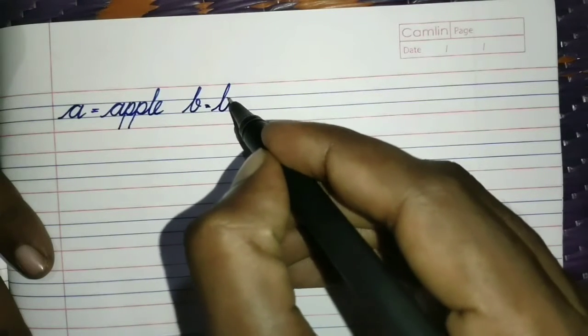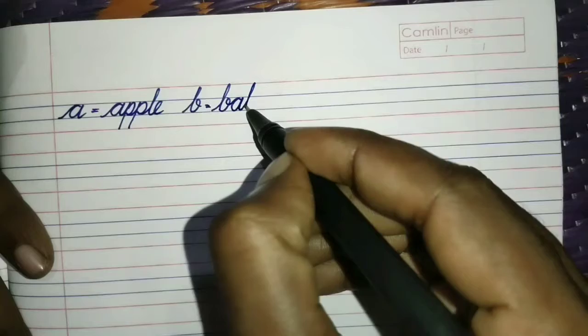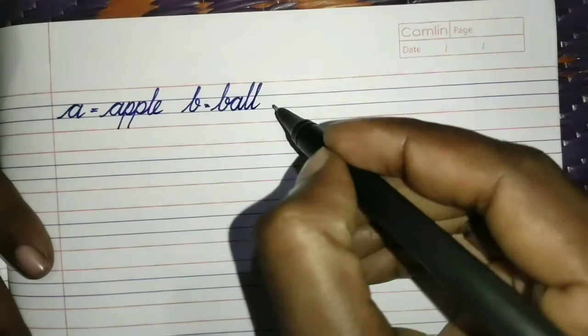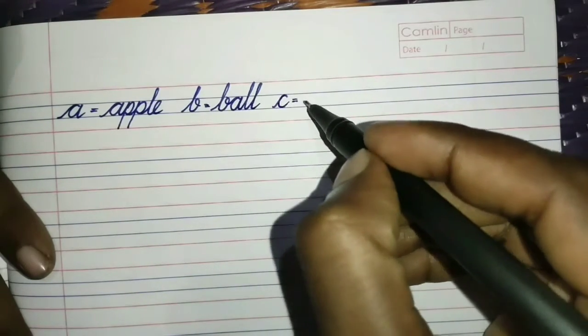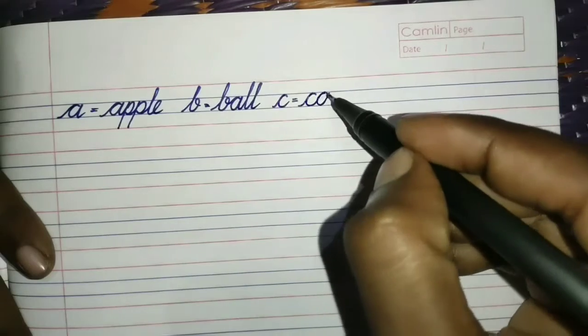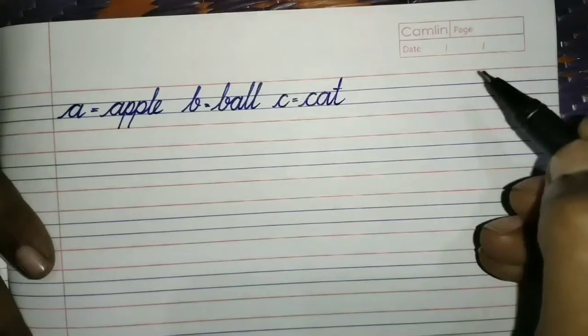A for Apple. A, P, P, L, E. Apple. B for Ball. B, A, L, L. Ball. C for Cat. C, A, T. Cat.